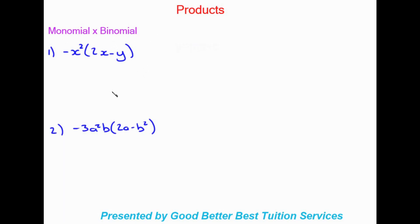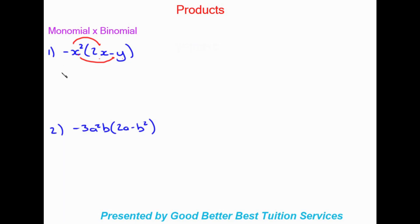Looking at monomial times binomial first, we have one term on the outside of the bracket, which is our monomial, and inside we have a two-term expression, which is our binomial. What we need to do is multiply this term into the brackets — we times the negative x squared into the first term and then into the second term.